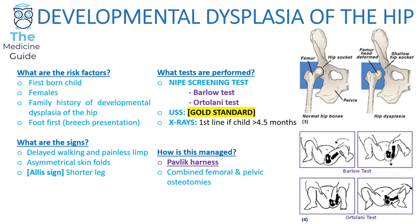The key features to remember about developmental dysplasia of the hip: risk factors involve the four F's — firstborn child, female, family history of DDH, foot first (breech presentation). Signs include delayed walking, painless limp, and one leg appearing shorter than the other. Ultrasound is the gold standard, and the Barlow and Ortolani tests are performed as part of NIPE screening. A Pavlik harness is used as part of management. These are the high yield buzzwords commonly asked in medical school final exams.